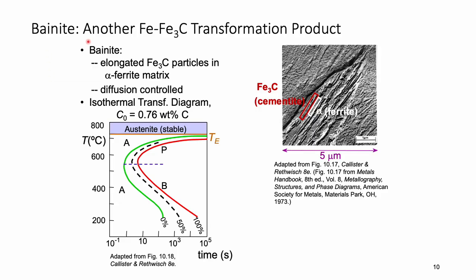Pearlite is one structure in the Fe-C phase diagram. Bainite is another structure. Both pearlite and bainite have two phases: alpha phase plus cementite. But their microstructures are different. Bainite has longer cementite particles in an alpha phase matrix. Like pearlite, the transformation from austenite gamma phase to either pearlite or bainite both involve diffusion of carbon atoms.